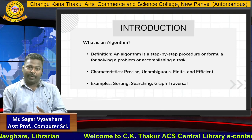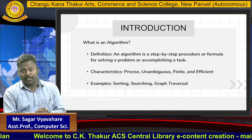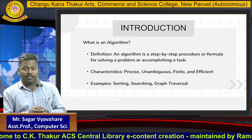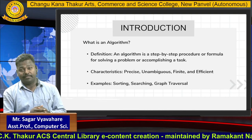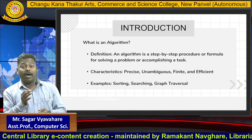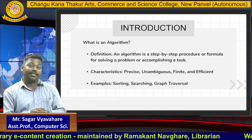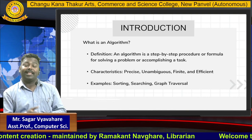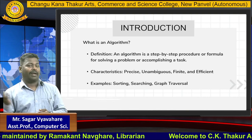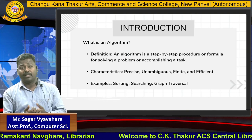So how should an algorithm be? There are certain characteristics associated with an algorithm. The first characteristic is precise. The second is unambiguous. The third is finite, and the last is efficient.